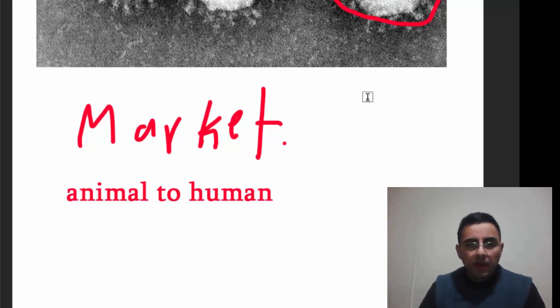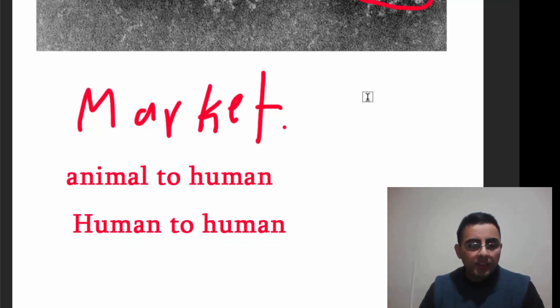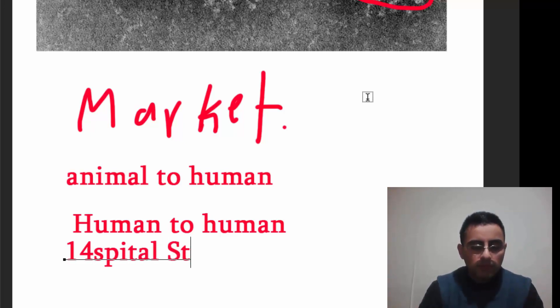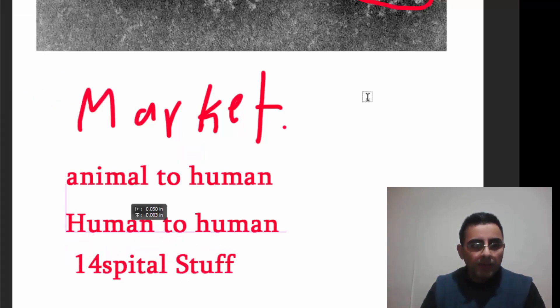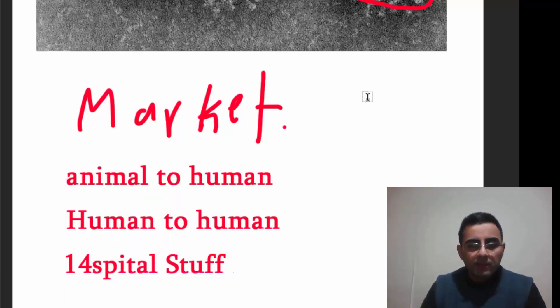This fact will not be very important and notable, but Chinese government now says that new transmission from human to human occurred. One infected patient transmitted infection to other 14 hospital staff members. So it is confirmed that this new strain of coronavirus is transmitted human to human.